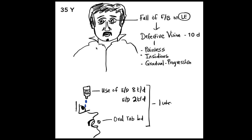So we have a 35-year-old male who complained of a foreign body falling on his left eye while driving a two-wheeler. He suddenly felt something fall into his eye, and following that event he had defective vision for 10 days. The defective vision is painless, insidious, and gradual in progression. The patient gives a history of using eye drops around eight times a day and another eye drop twice a day, and also had some oral tablets twice daily for one week.